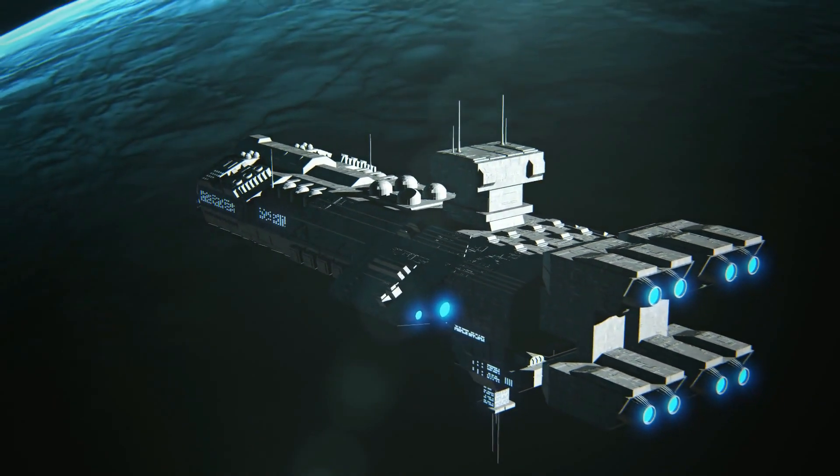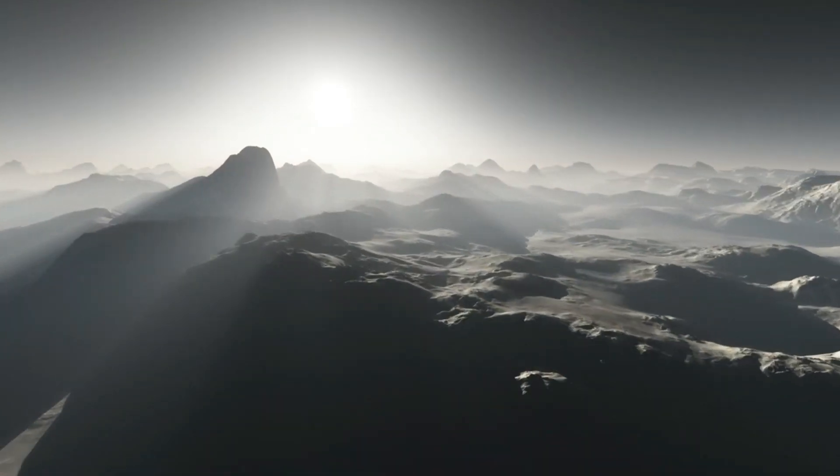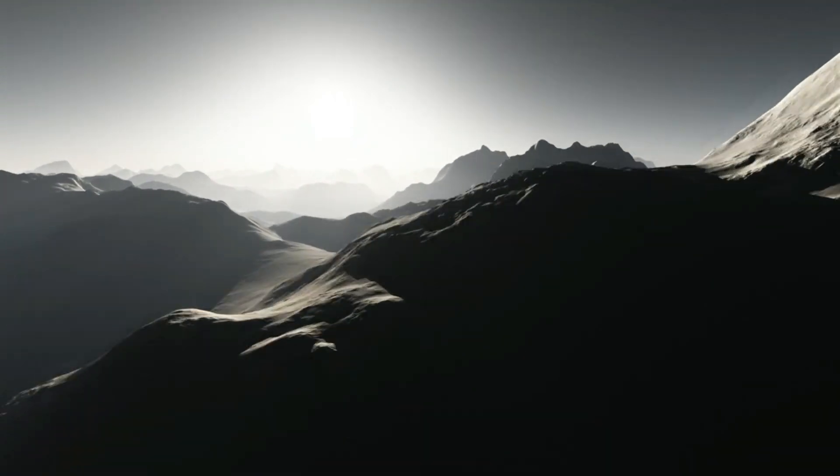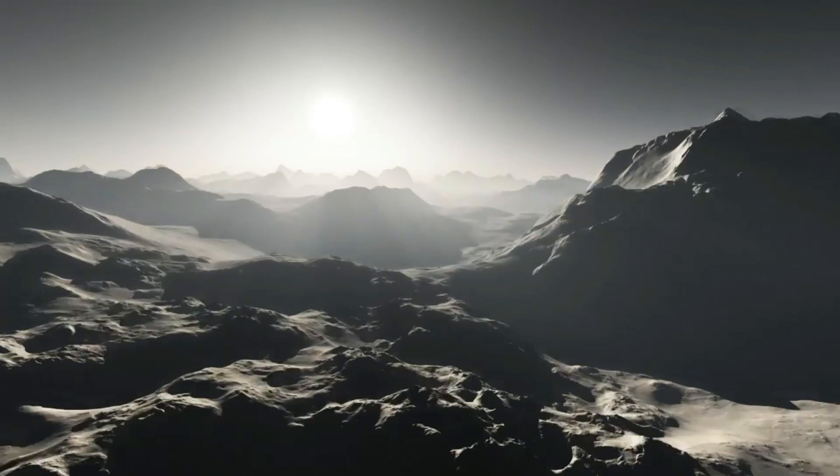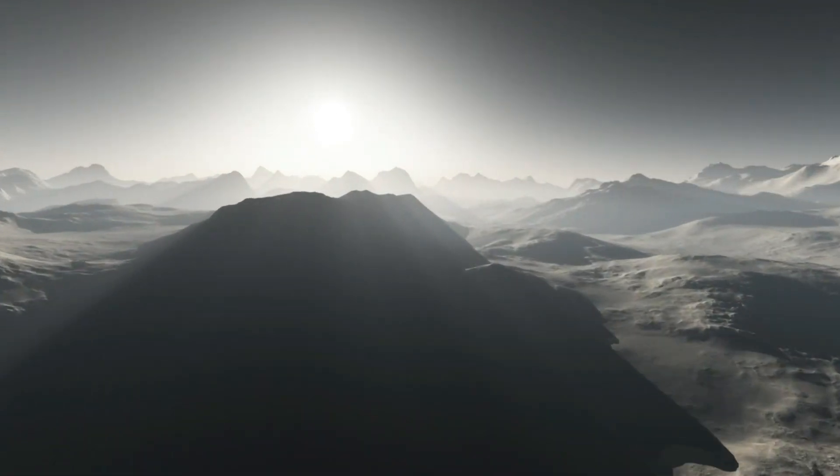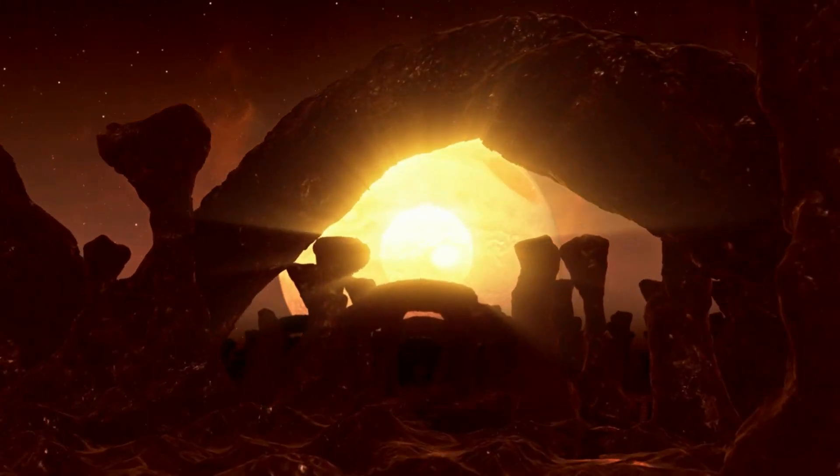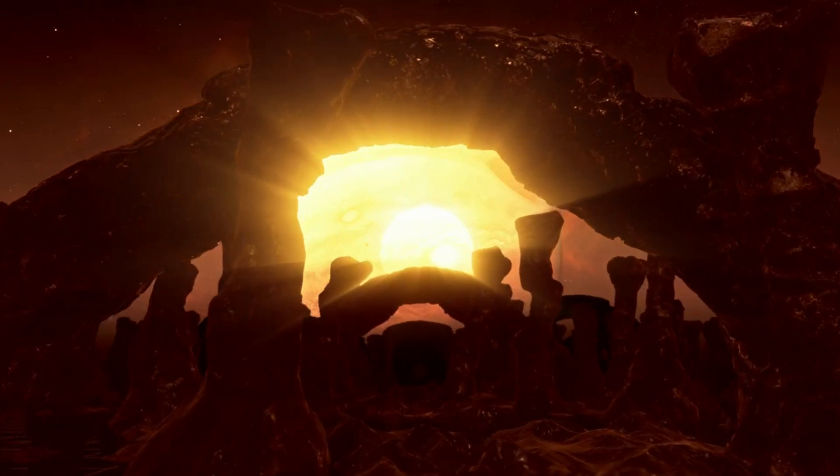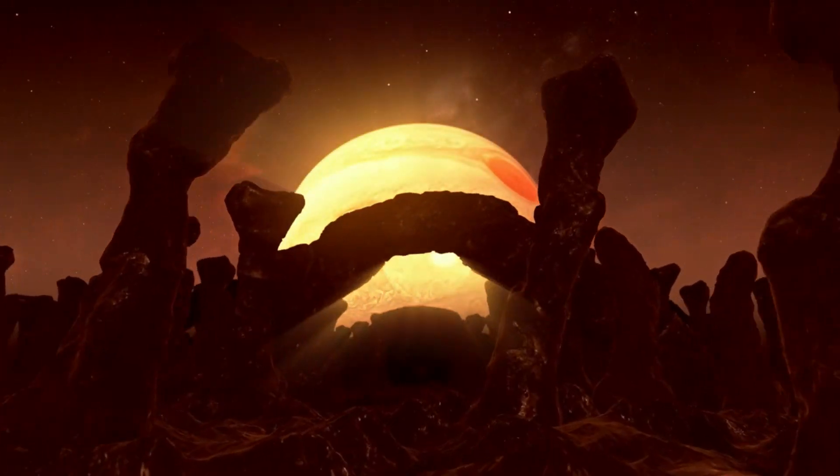Proxima b is locked in what's called tidal locking. One side of the planet is constantly bathed in the harsh light of its star, while the other side is trapped in eternal darkness. At first, researchers speculated that a civilization might thrive there, using advanced technology to bridge the extreme conditions of day and night.